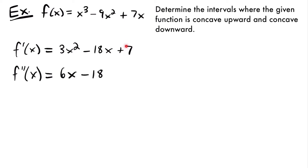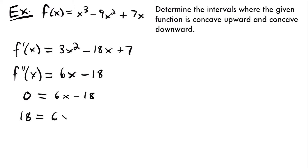The derivative of 7 is 0, the derivative of negative 18x is negative 18, and the derivative of 3x squared is 6x. Now we have our second derivative that we can set equal to 0 and solve for values of x that have the potential to be inflection points. So if we set this equal to 0, we'll have 0 equals 6x minus 18. Adding 18 to both sides gives 18 equals 6x, and dividing both sides by 6, we find that x is equal to 3, our potential inflection point.